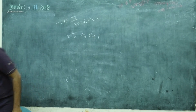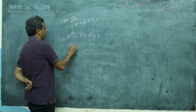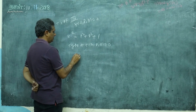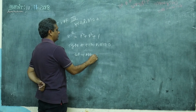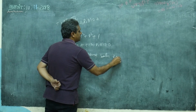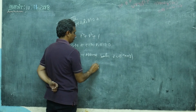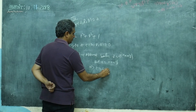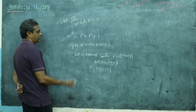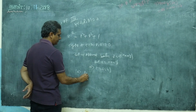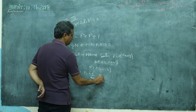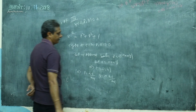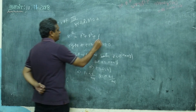Looking at this problem, first decide the type. Write: type of f(z, P, Q) equals 0. Then assume the solution: z equals f of x plus ay. Put u equals x plus ay; then z becomes f of u. P becomes dz/du; q becomes a·dz/du. Now substitute these P and Q values into the given equation.